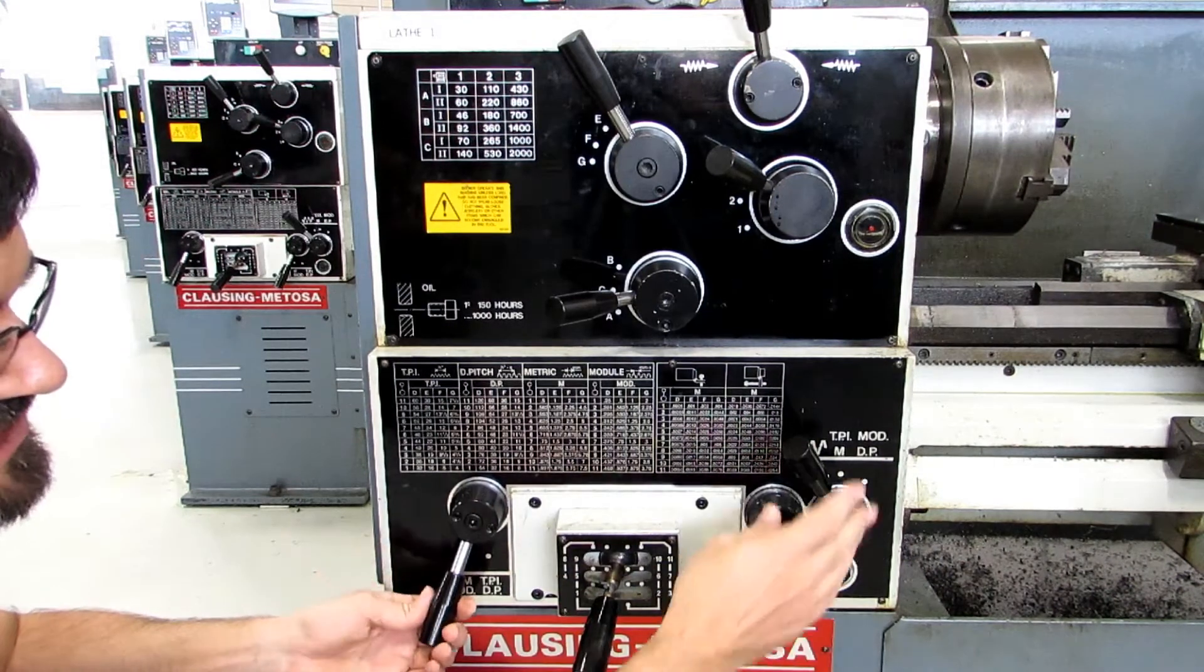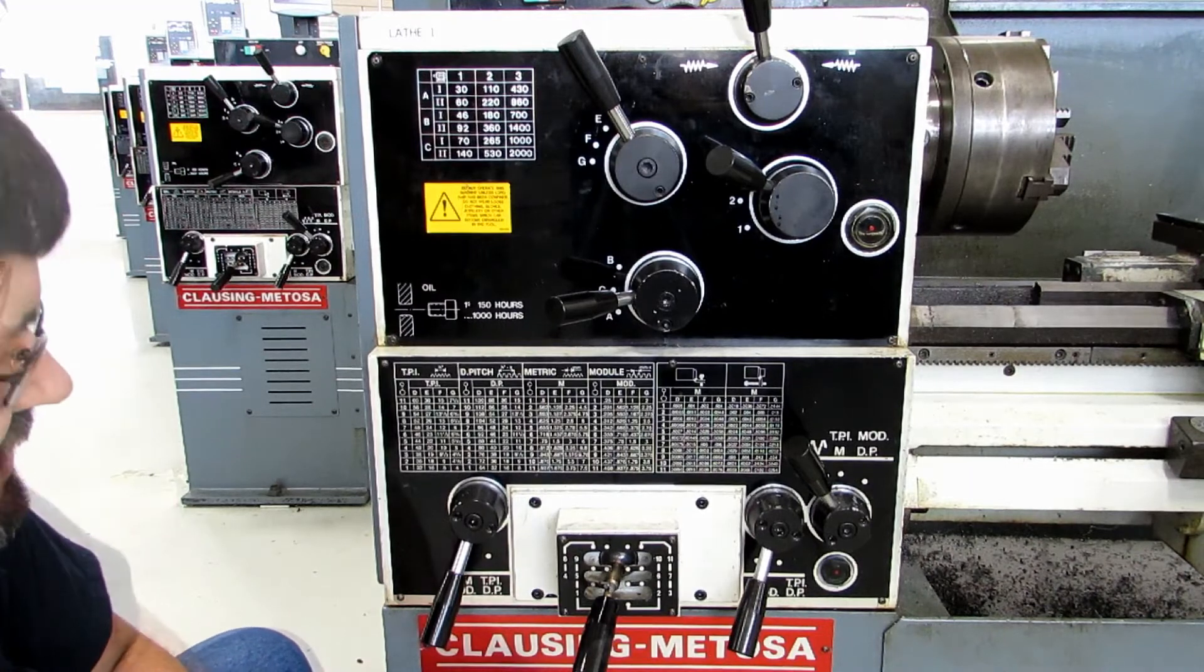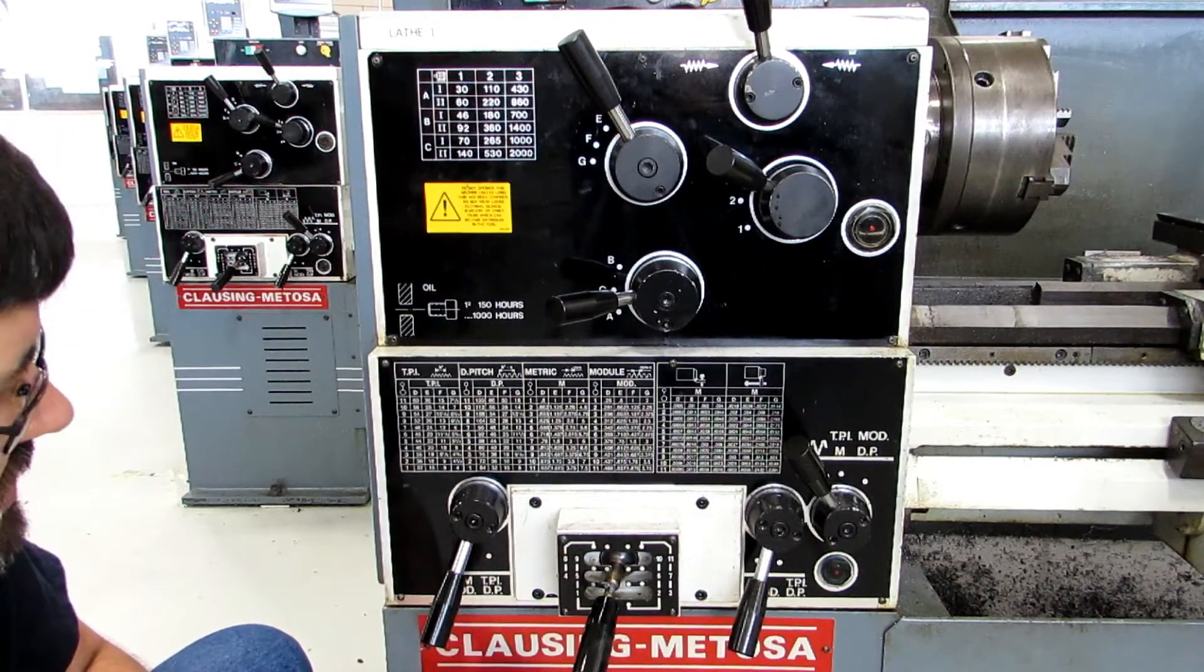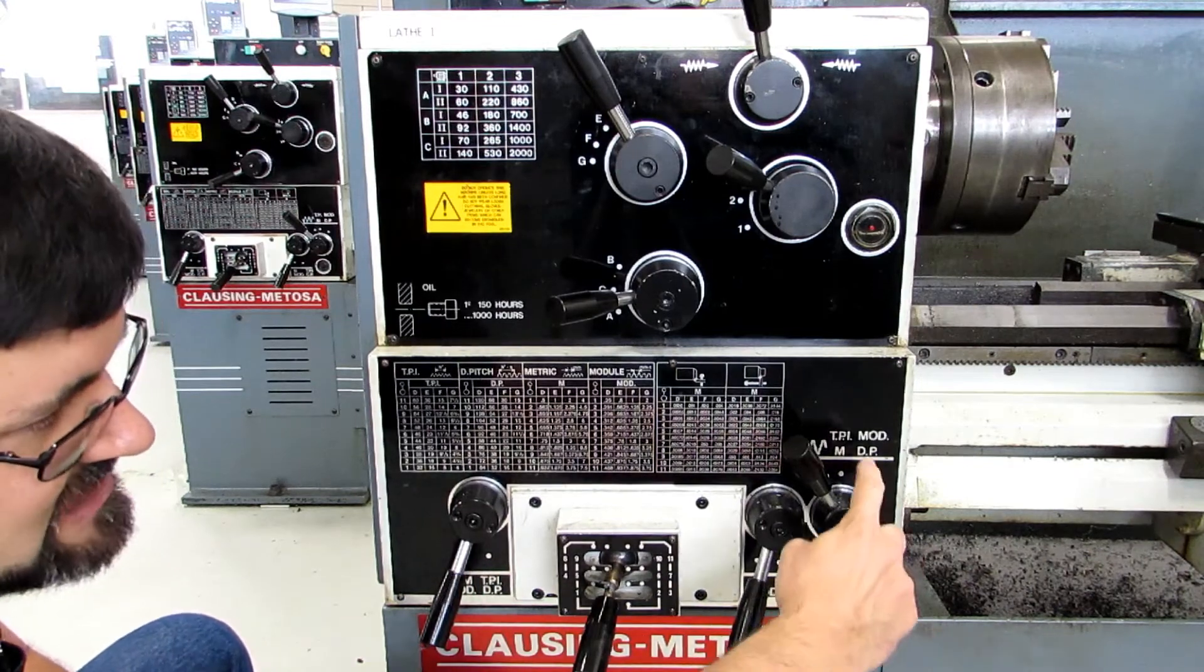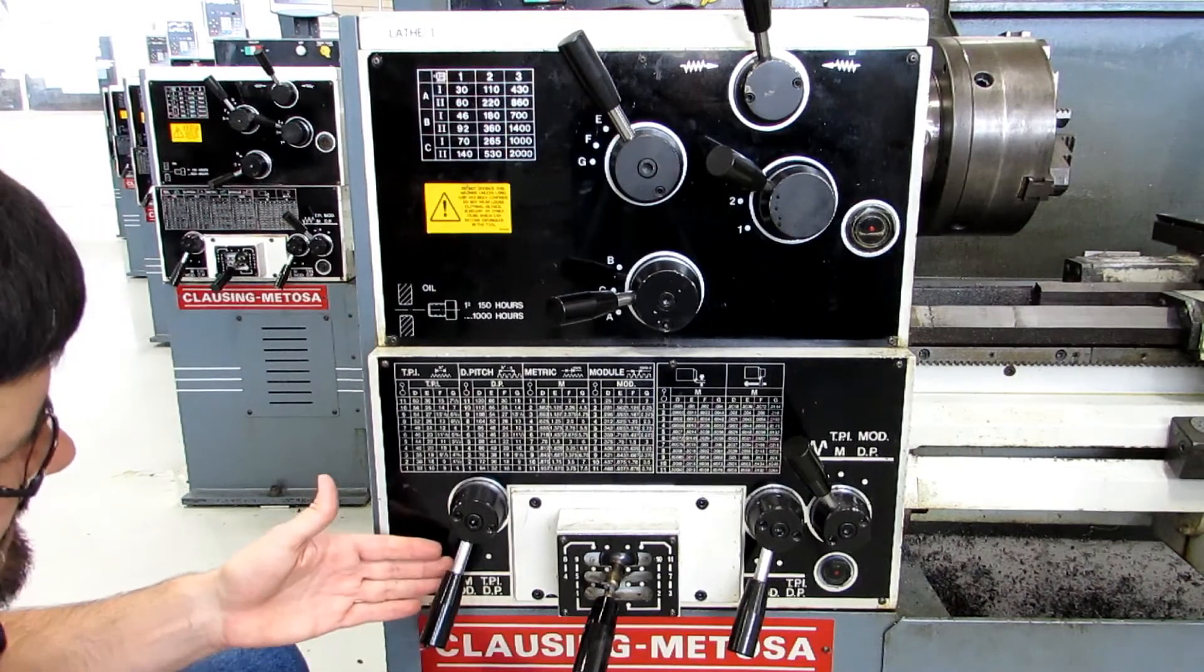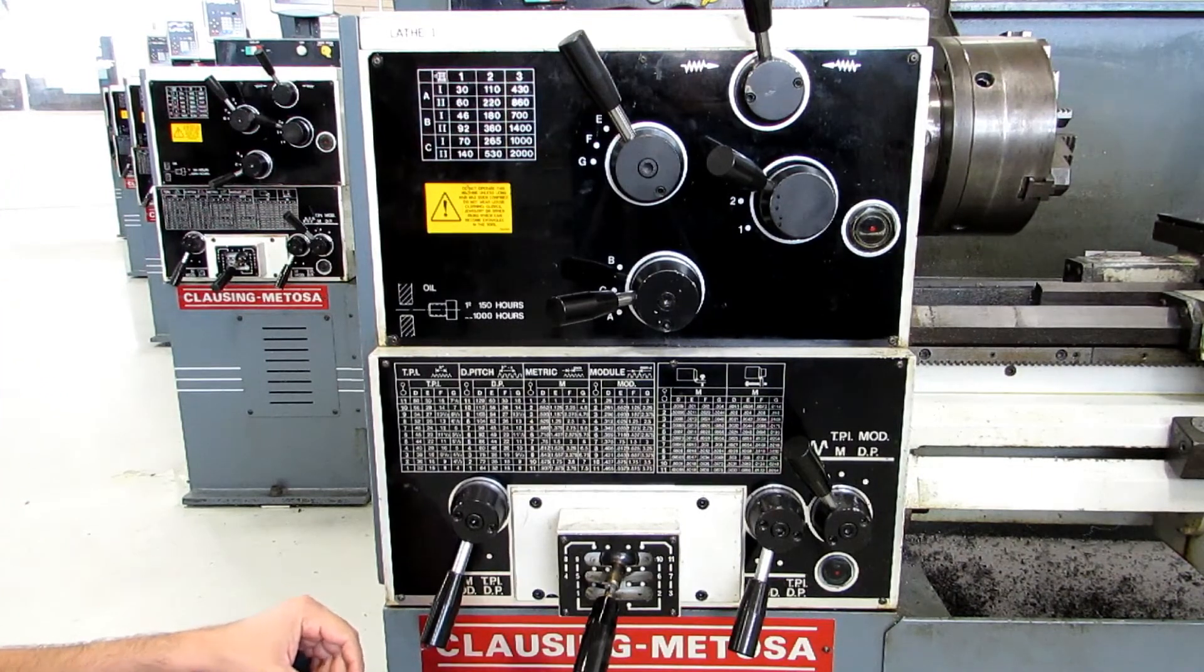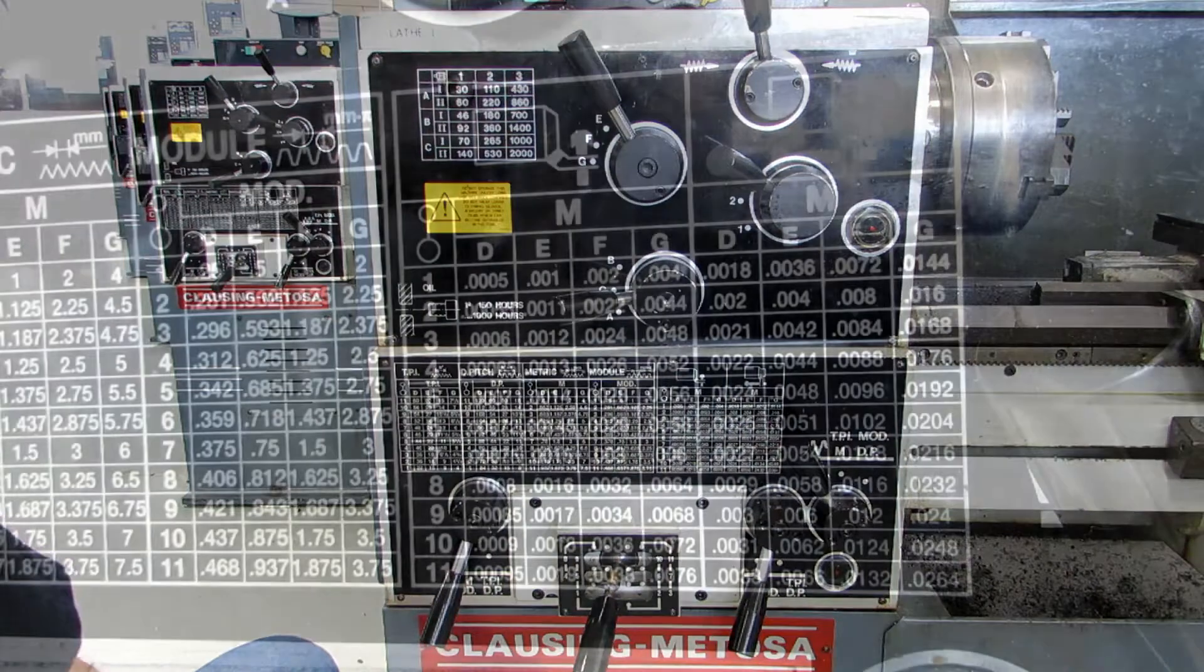You also have these three handles here that choose which type of feed you're doing. For power feed on the lathe, you will have all three of them all the way to the left. If you were cutting threads per inch, you would need to have all of them at the TPI location. Likewise, metric threads, they would all have to say M. And if you were ever doing module or diametral pitch, you would just need to have the handles set at that particular location.